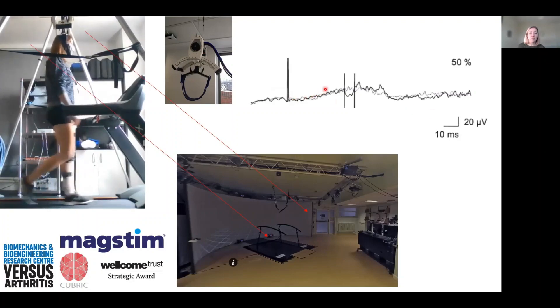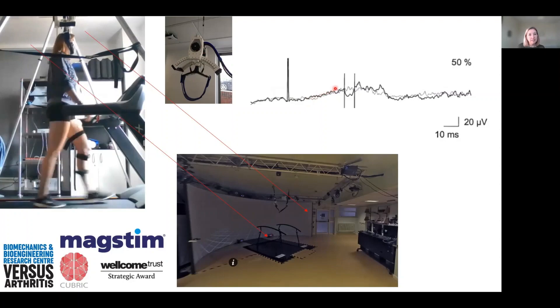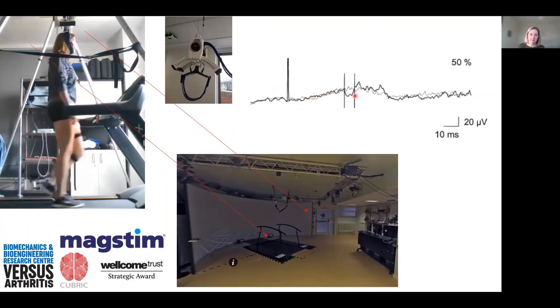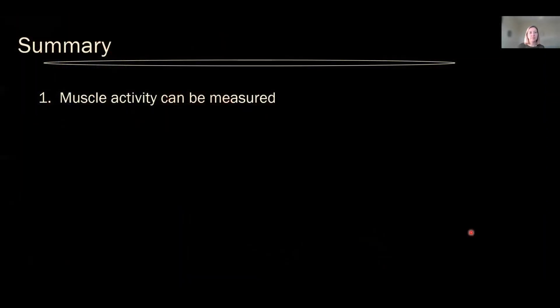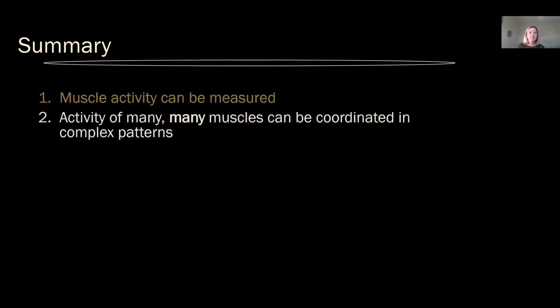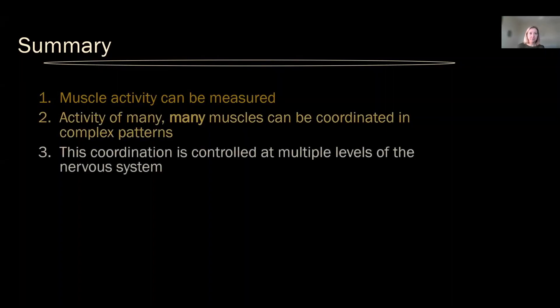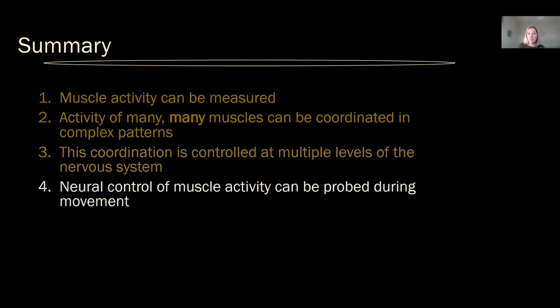These are recordings of some muscle activity — when we give a stimulus we can see changes in the muscle activity in the same way as described for peripheral nerve stimulation. In summary today we've talked about the fact that muscle activity can be measured, which can be very useful particularly to clinicians and physiotherapists as they're thinking about what movements to prescribe. The activity of many muscles can be coordinated in complex patterns and this coordination is controlled at multiple levels of the nervous system — spinal and supraspinal.